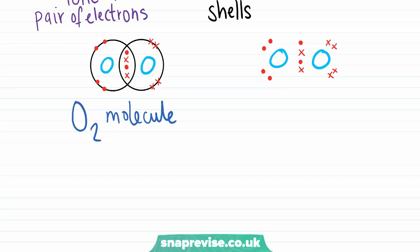In order to gain a full outer shell of electrons, each oxygen must share two electrons, to get from six electrons to eight electrons. When two electrons are shared between two atoms, we call this a single covalent bond. And when four electrons are shared between two atoms, we call this a double bond, which is exactly what we see in this example.